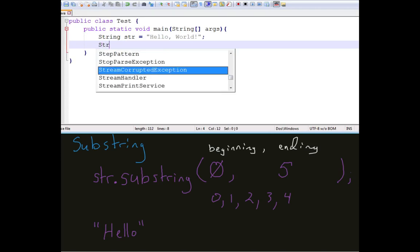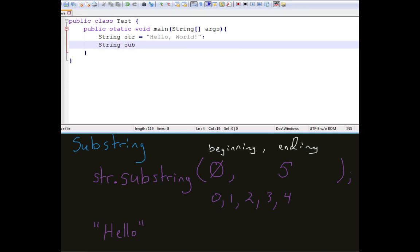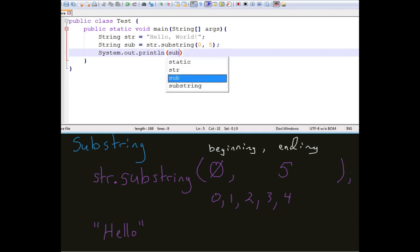And I want to just build that substring. I just want to take it and make it. So I'm going to, I'll just call this sub, str.substring, zero, comma, five, system.out.println, sub.